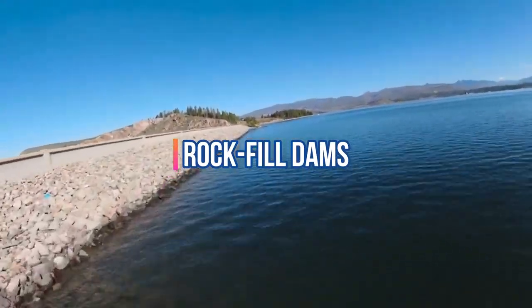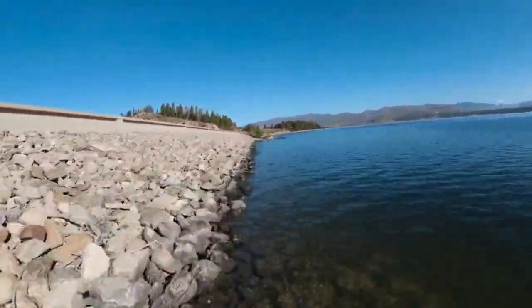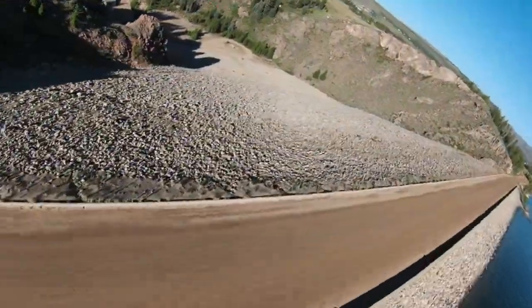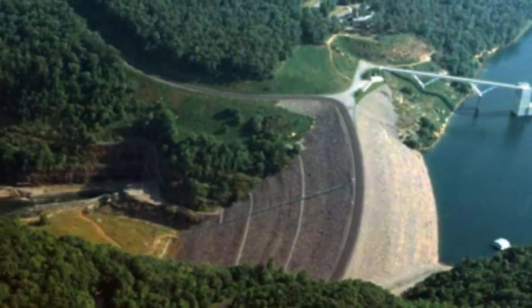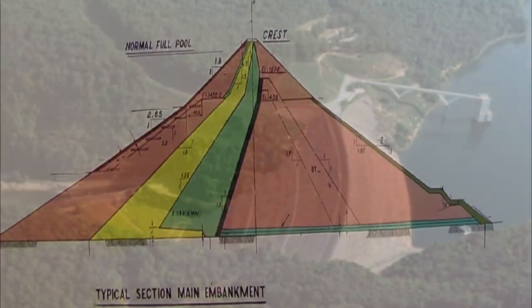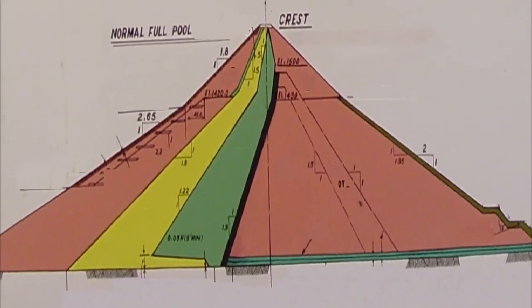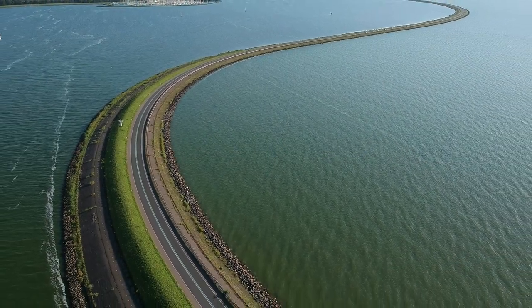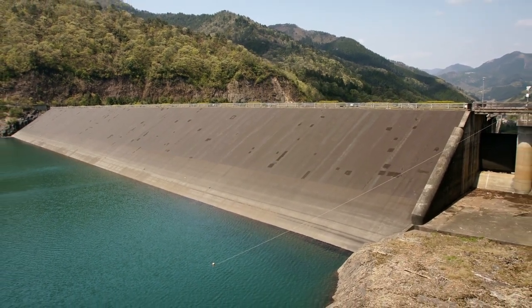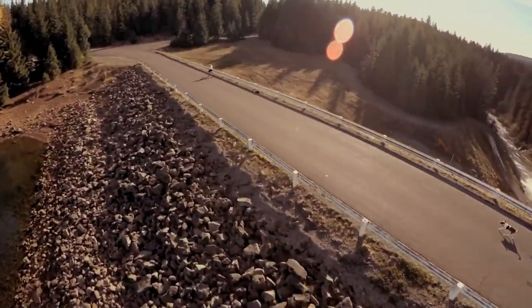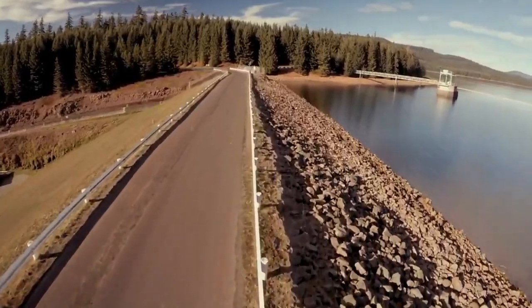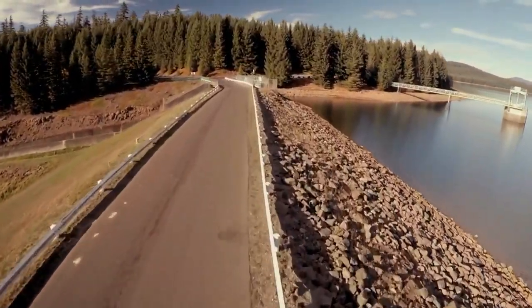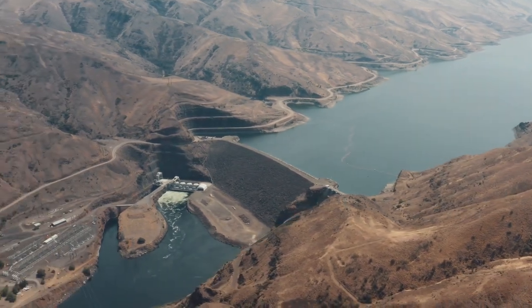Rock-fill dams use rock of all sizes to provide stability and an impermeable membrane to provide watertightness. The membrane may be an upstream facing of impervious soil, a concrete slab, asphaltic concrete paving, steel plates, other impervious elements, or an interior thin core of impervious soil. Rock-fill dams require rock or compact sand and gravel foundations that will not be subject to settlements large enough to rupture the watertight interior core. This type is suitable for remote locations where good rock is abundant, where suitable soils are insufficient or high rainfall makes construction of an earth-fill dam impractical, or where a concrete dam would be too costly. Rock-fill dams are popular in tropical climates because their construction is suitable for long periods of high rainfall.